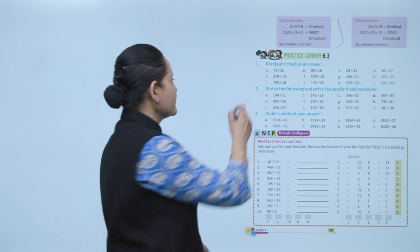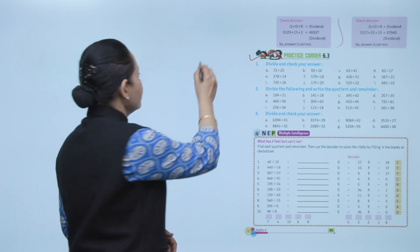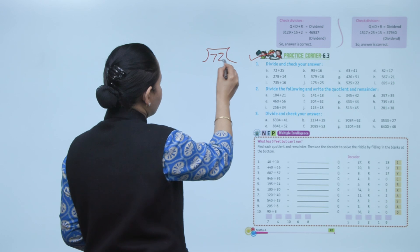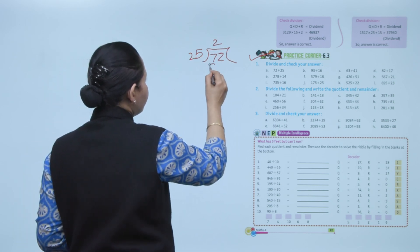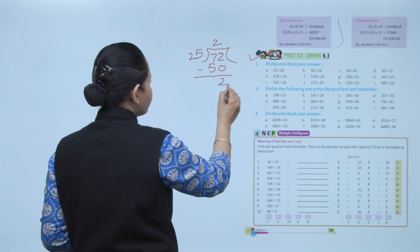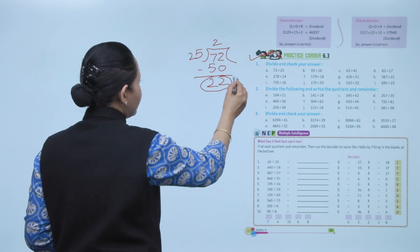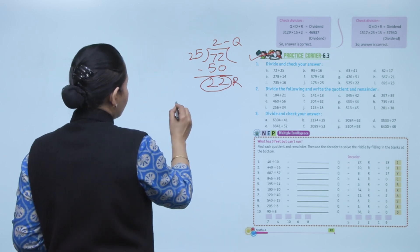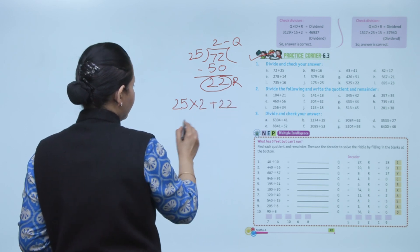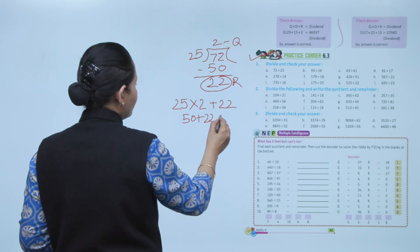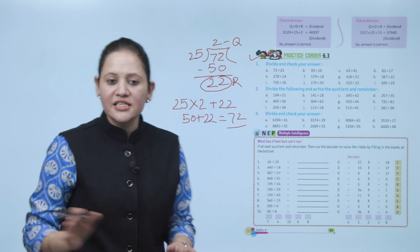Practice corner 6.3: divide and check your answer. Example: 72 divided by 25. Both are two-digit numbers, so 25 × 2 = 50, subtract from 72, remainder is 22. Since 22 is less than 25 and no more digits are left, quotient is 2 and remainder is 22. Check: 25 × 2 + 22 = 72, which equals our dividend — answer is correct.